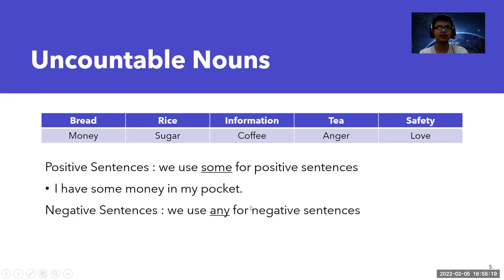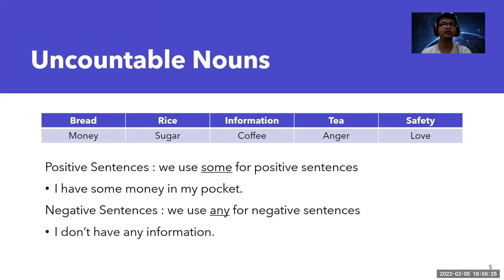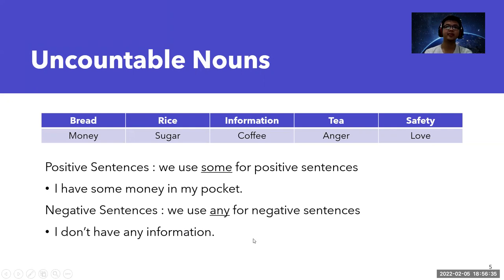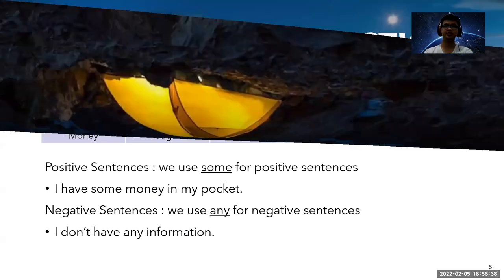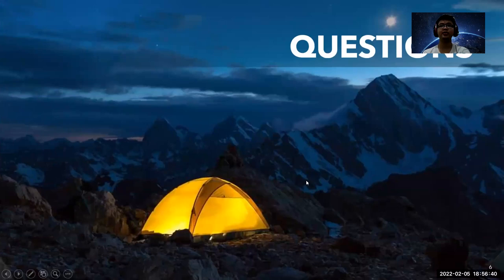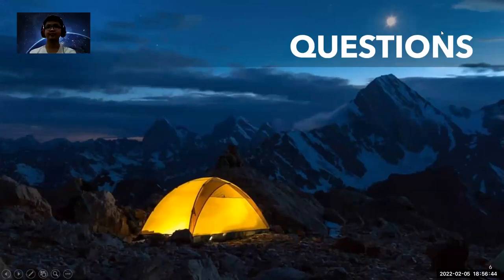For negative sentences with uncountable nouns, we use 'any.' For example: 'I don't have any information.' For information, there are a lot of things we cannot count, so it is uncountable.